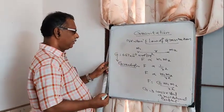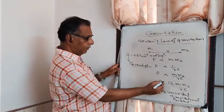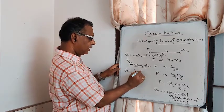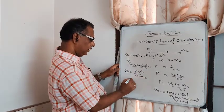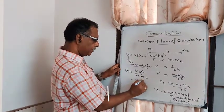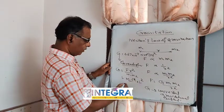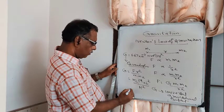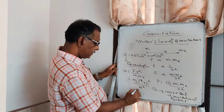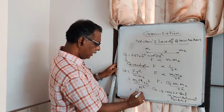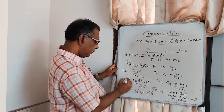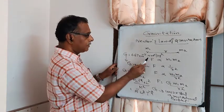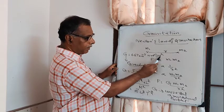The dimension of G can be derived from G = F·R² / (M1·M2). F has dimension M·L·T⁻², R² is L², and M1·M2 is M². Solving, the dimension of G is M⁻¹·L³·T⁻². The unit of G is Newton meter square per kilogram square — force is Newton, distance is meter, mass is kilogram.